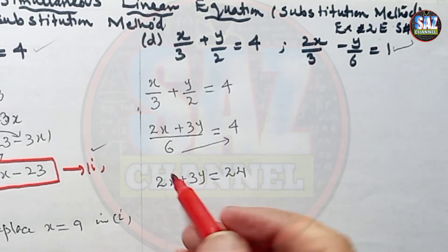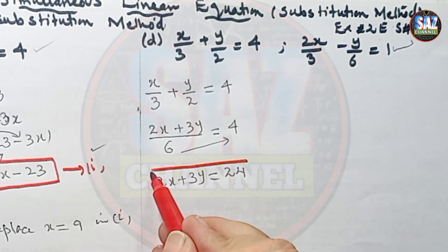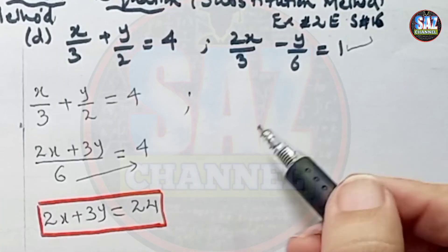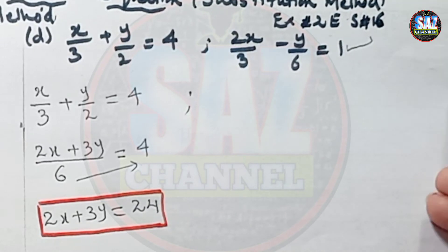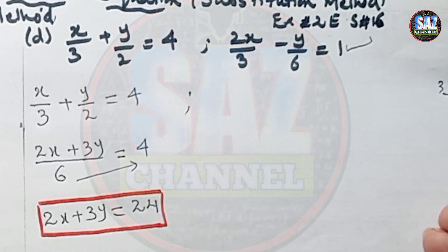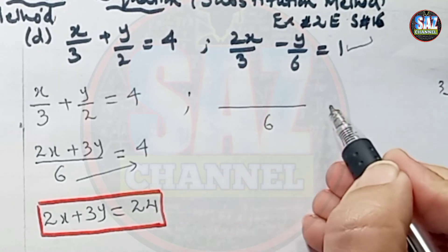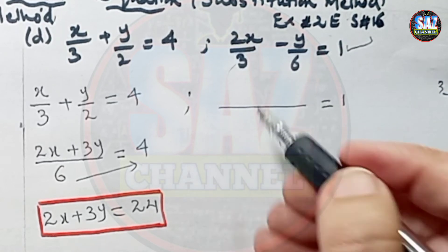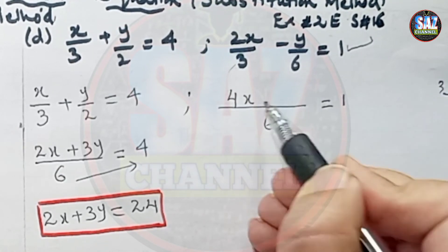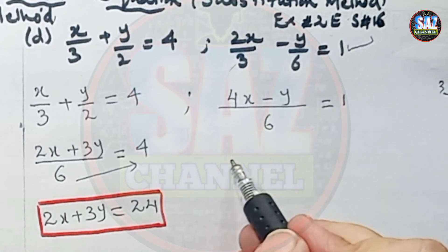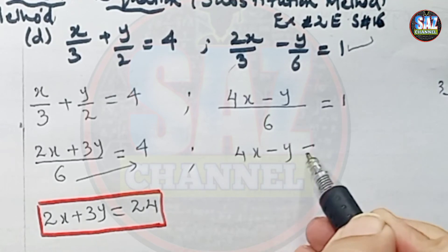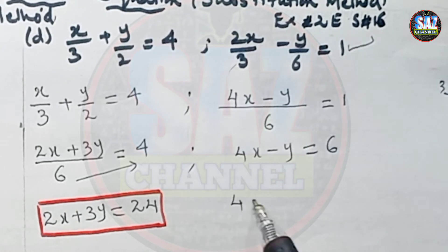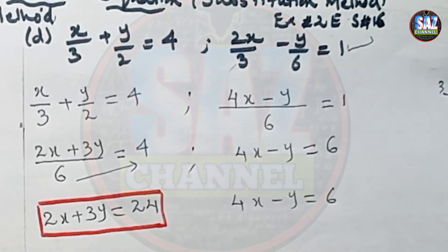For the second equation, LCM of 3 and 6 is 6. Multiplying through: 3 goes into 6 twice, giving 4x, and 6 goes into 6 once, giving minus y equals 1 times 6, which is 6. So the second equation becomes 4x minus y equals 6.